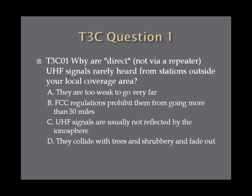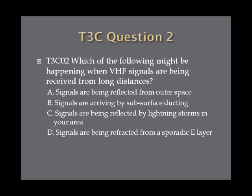Question 1. Wired direct, not via repeater, UHF signals rarely heard from stations outside your local coverage area. A. They are too weak to go very far. B. FCC regulations prohibit them from going more than 50 miles. C. UHF signals are usually not reflected by the ionosphere. D. They collide with trees and shrubbery and fade out. Question 2. Which of the following might be happening when VHF signals are being received from long distances? A. Signals are being reflected from outer space. B. Signals arriving by subsurface ducting. C. Signals are being reflected by lightning storms in your area. D. Signals are being refracted from a sporadic E layer.